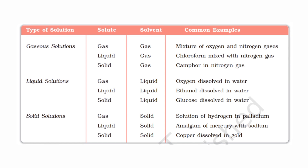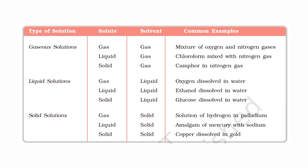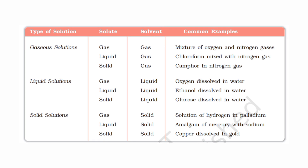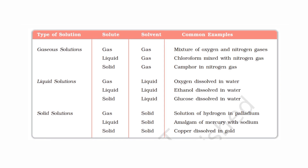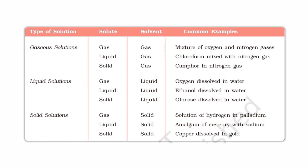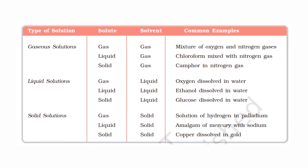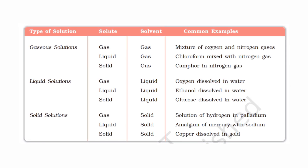Examples are important. For liquid solutions, the solvent is liquid and the solute can be gas, liquid, or solid — giving gas-liquid, liquid-liquid, and solid-liquid solutions. For solid solutions, the solute can be gas, liquid, or solid — giving gas-solid, liquid-solid, and solid-solid solutions. In total, we have nine types of solutions.